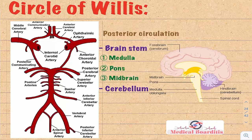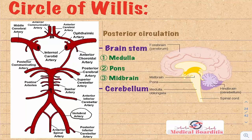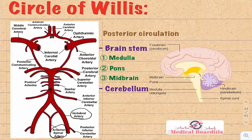This starts with the right and left vertebral arteries uniting together and forming the basilar artery. The two vertebral arteries, before they unite, give off two important branches. The first branch is the anterior spinal artery, which is formed by a combination of the two vertebral arteries on each side. The anterior spinal artery supplies the medial part of the medulla and also goes down to supply the anterior part of the spinal cord.